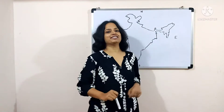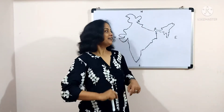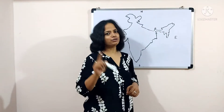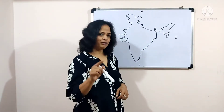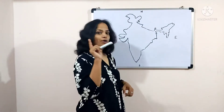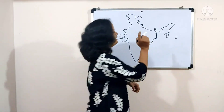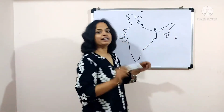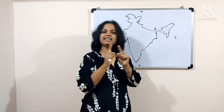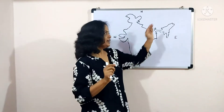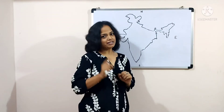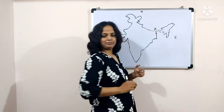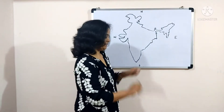Now we will go for the Seven Sisters. Very often students say, 'Ma'am, the states are very tiny so it's very difficult to learn.' No — you are going to enjoy it and I have simplified it. Yeh sari states ko hamne ek sentence mein le liya. And they are in order. So we will write it first.